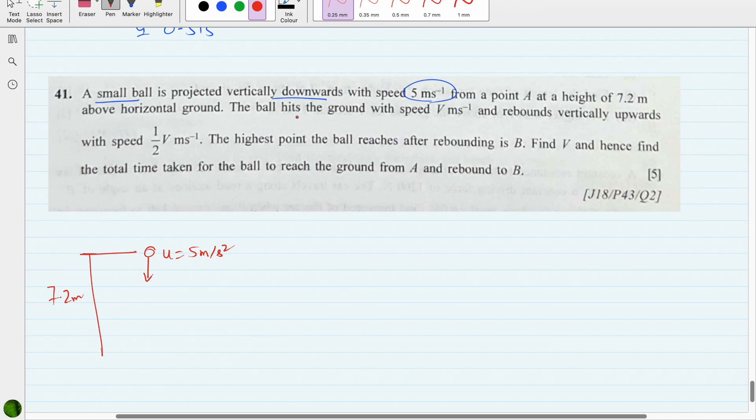The ball hits the ground with speed v and rebounds vertically upwards with speed v/2. When it is coming back, speed is v/2 meters per second. The highest point the ball reaches after rebound is B. Let's say it reaches this point, that is B. It was released at point A.